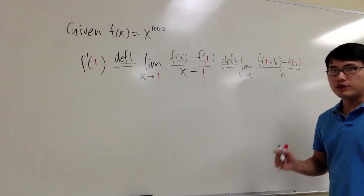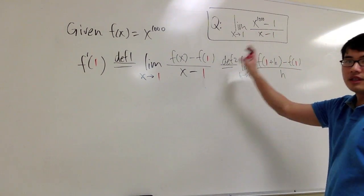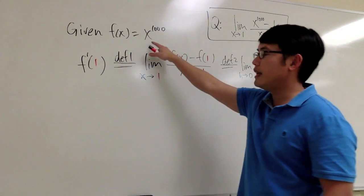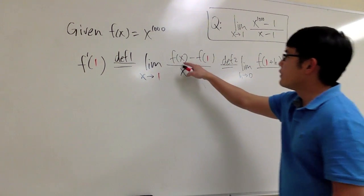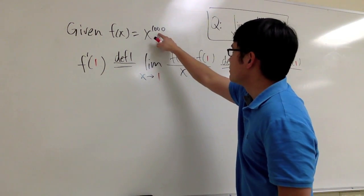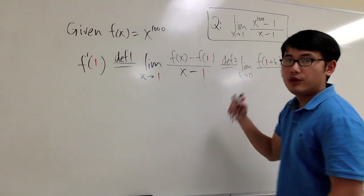So if you think about the question earlier, this. So as you can see, this limit is secretly the definition 1 when you have x to the 1000 power, and the a value equals 1. f of x equals x to the 1000 power, and if you plug in 1, 1 to the 1000 power, you also get that.